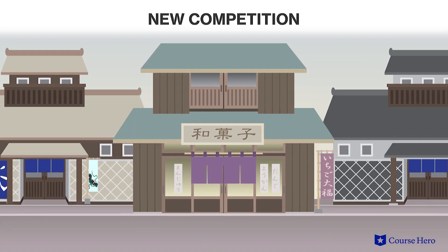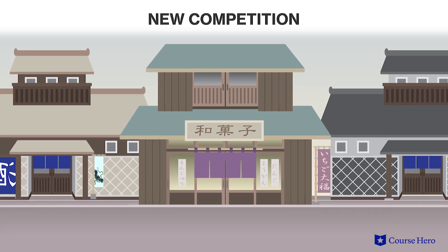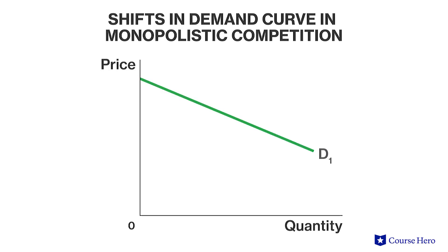Unless establishing more Chinese restaurants in the area is restricted, the profitability of the existing restaurant is likely to attract competitors. These may differentiate their cuisine, for example by offering different menus, while attempting to cater to the same customers as the original restaurant. As more restaurants open for business, the original restaurant's downward sloping demand curve shifts to the left as its customers switch to the alternatives. Competition will force the restaurant to lower prices to stay open. Eventually, prices fall to a point where economic profits are eliminated.